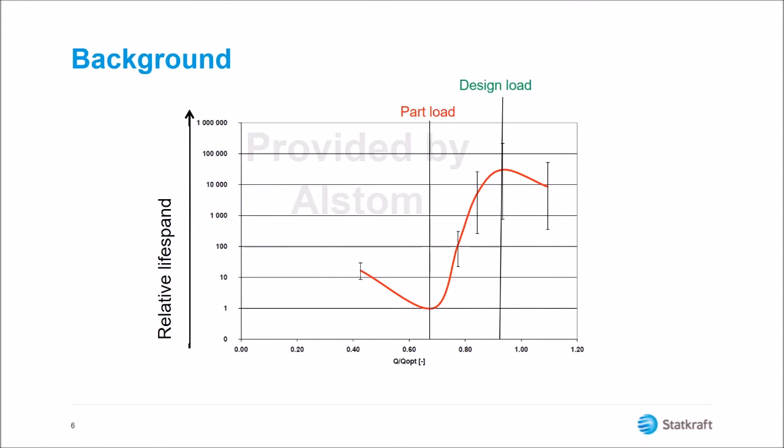This chart, provided by the turbine runner supplier Alstom, shows clearly the effects of part load.